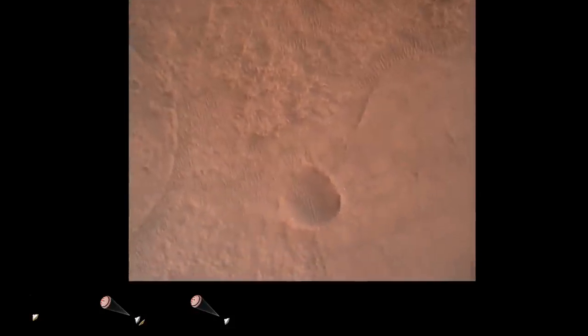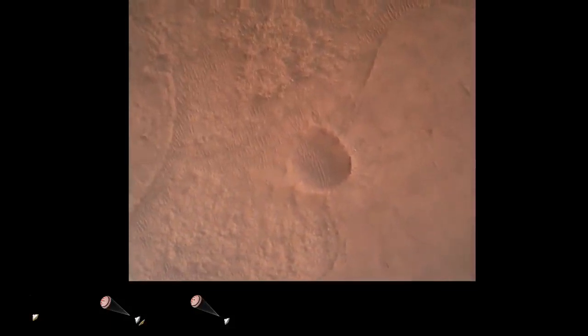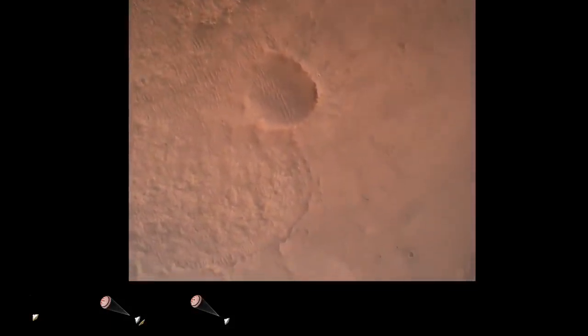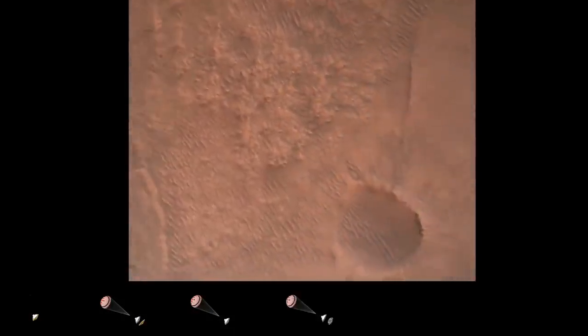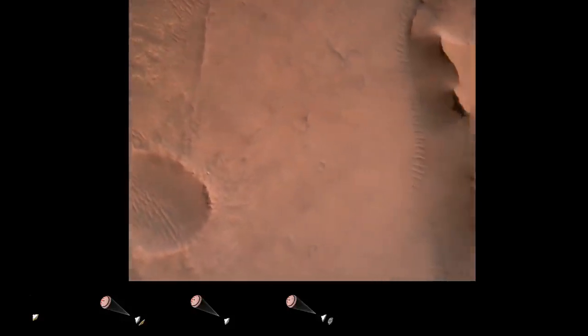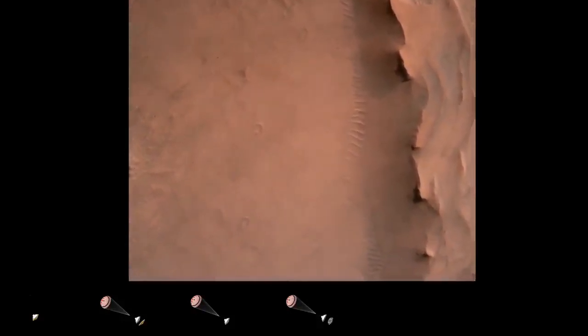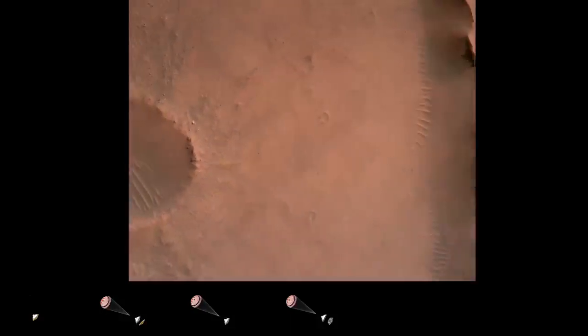Priming. We have priming of the landing engines. Backshell separated. Current velocity is 83 meters per second at about 2.6 kilometers from the surface of Mars. We have confirmation that the backshell has separated.